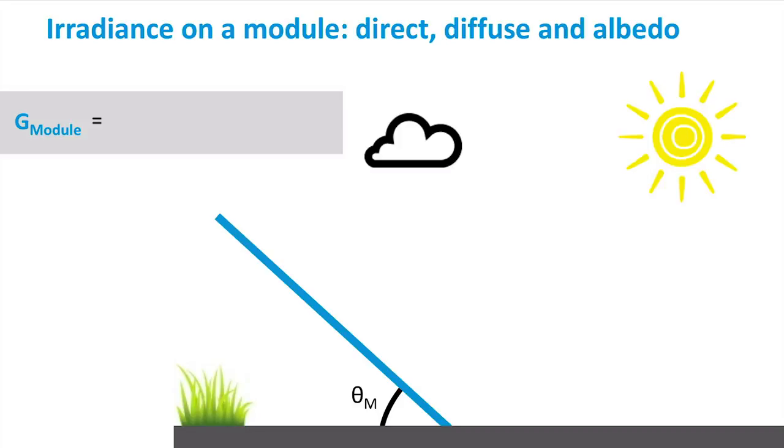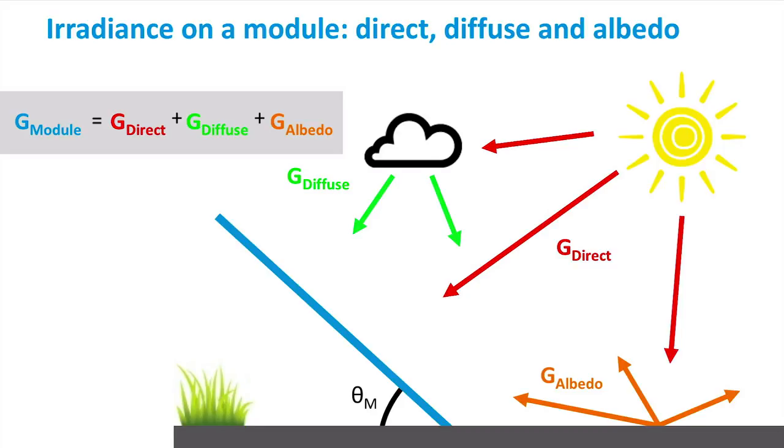Here we have the solar module mounted on a plane, tilted at a certain angle theta m. The irradiance that is incident on the module can be divided into three components. The direct irradiance is directly incident on the module. The diffuse irradiance is the solar radiation that reaches the module surface after being scattered by molecules in the atmosphere. Finally, the albedo is the part of irradiance that reaches the module after reflection by the ground or objects in the neighborhood.